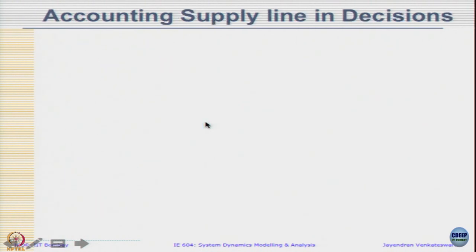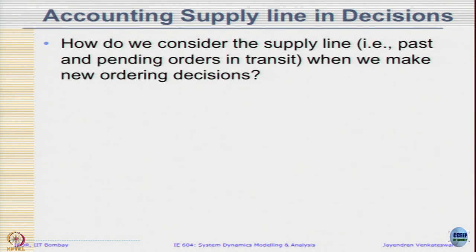One way to account for it — how do we consider supply line, that is the past and pending orders in transit, when we make new ordering decisions? There are many thoughts about how we can include the supply line information in decision making. The only other structure we are familiar with is a simple negative feedback system where, when we had only the inventory, we had a desired inventory and then adjusted to ensure an appropriate quantity getting delivered. Let us see whether we can mimic the same decision here.